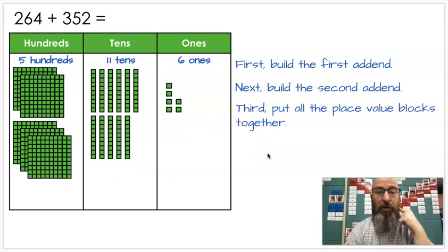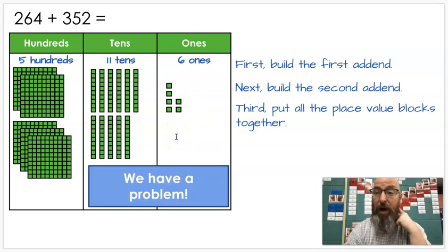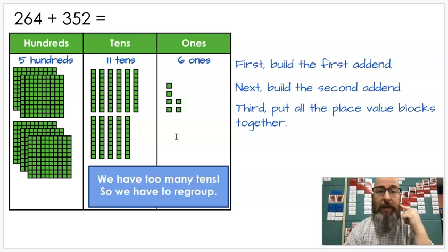Third, we're going to put them all together. Five hundreds, eleven tens, six ones. We have a problem. Do you see the problem? What is the problem? We have too many tens. Remember our rule? We can't have more than nine. Once you have ten, you have to move them over, whether it's ten ones to a ten, ten tens to a hundred, or for even bigger numbers, you could do ten hundreds to a thousand, which we haven't gotten to yet. So regardless, we have too many tens. We have to regroup.